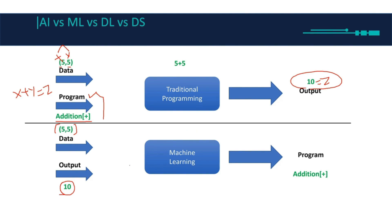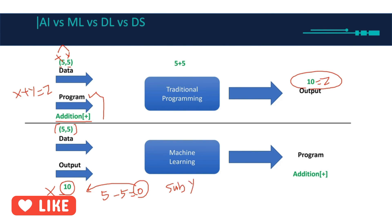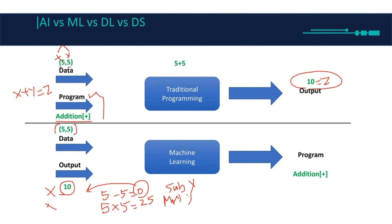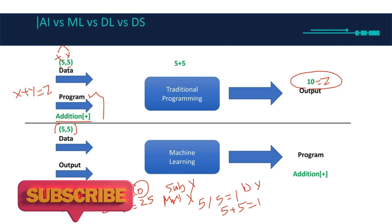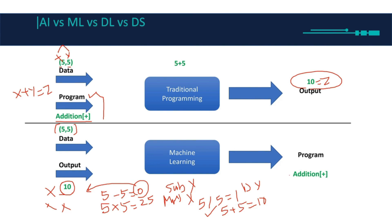The machine learning algorithm sees two input numbers and a numeric output and tries to find the pattern. Five minus five equals zero — not the same as 10, so subtraction is cancelled. Five times five is 25 — not 10, so multiplication is wrong. Five divided by five is 1 — not 10, so division is cancelled. Five plus five is 10 — that matches the output, so the pattern found was addition. That's it in simple terms.